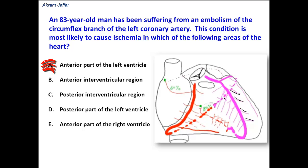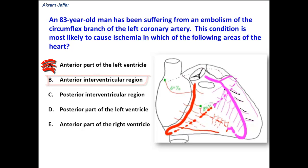Option B: The anterior interventricular region. The interventricular septum is supplied by interventricular branches from the anterior interventricular artery, which supply the anterior two-thirds of the interventricular septum, and also by septal branches from the posterior interventricular artery. The anterior interventricular region is supplied only by the left anterior descending artery.